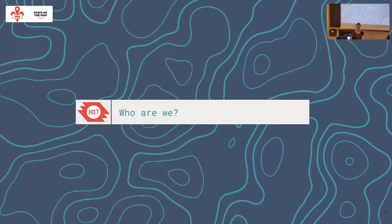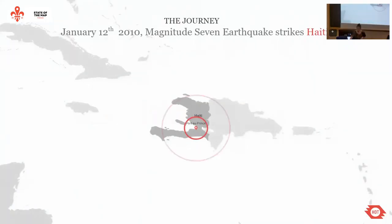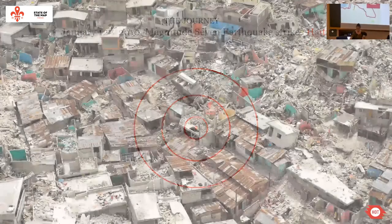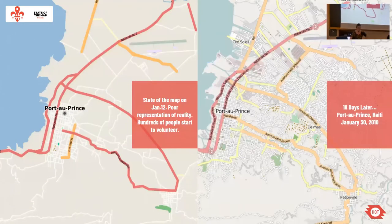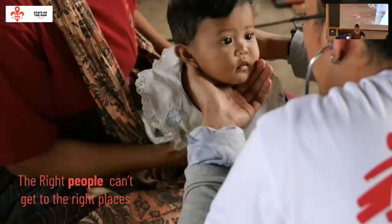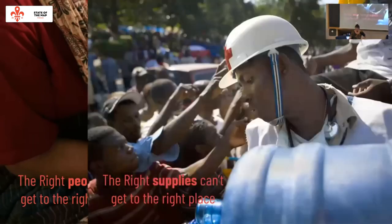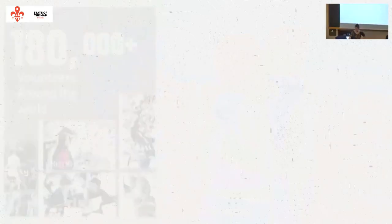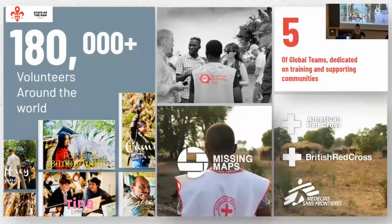Who knows HOT? Hands up. HOT started with an earthquake. They were having trouble coordinating things. Many of the places most vulnerable are not mapped. The right people can't get to the right places. The right supplies can't get to the right place.